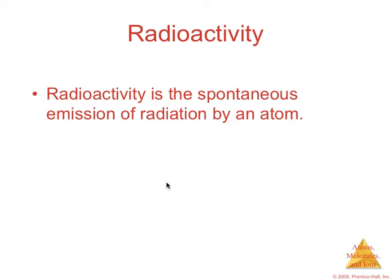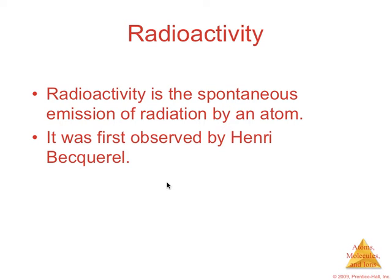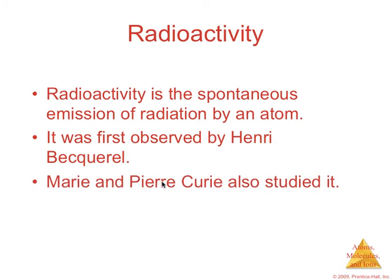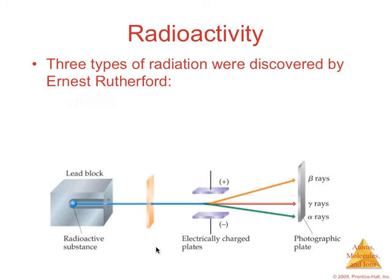Kind of a random little topic on radioactivity. It's the spontaneous emission of radiation by an atom. It was first observed by Henri Becquerel. Marie and Pierre Curie also studied it. Three types of radiation were discovered by Ernest Rutherford: alpha particles, beta particles, and gamma rays. He had a lead block, radioactive substance inside, and he had charged plates. From the path of these rays, he determined that the beta ray was negative, the gamma ray was neutral, and the alpha ray was positive. The amount of deflection also showed him that this alpha ray was heavier than the beta ray or beta particle.